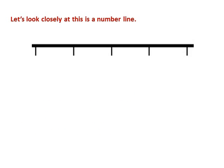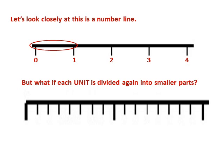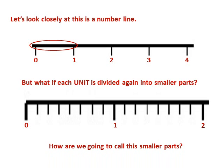Let's look at this same number line again and mark each line — that's zero to four. What if each unit is divided again into smaller parts? Meaning from zero to one, you have smaller subdivisions. Let's blow this one up and mark the darker parts starting from zero, then one, then two. As you can see, between zero and one, you have another subdivision — it's divided into smaller pieces, and also from one to two. So how are we going to call these smaller parts?